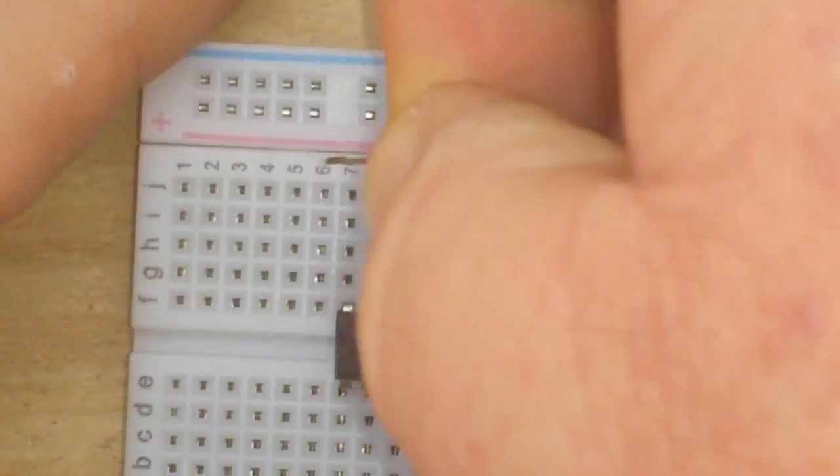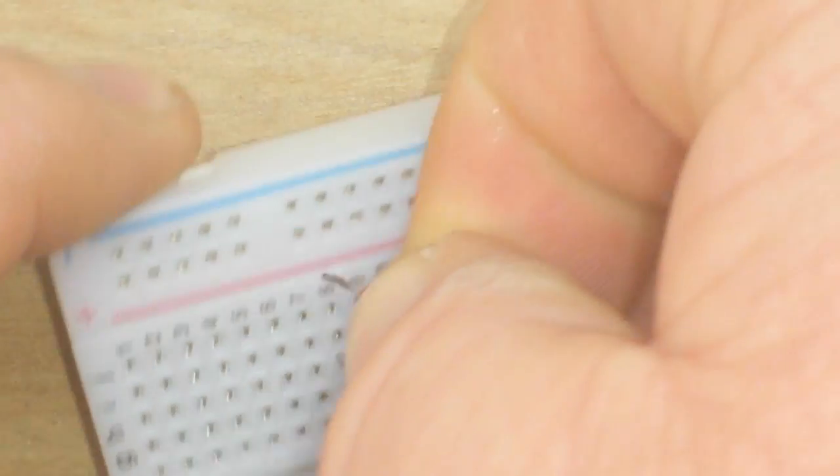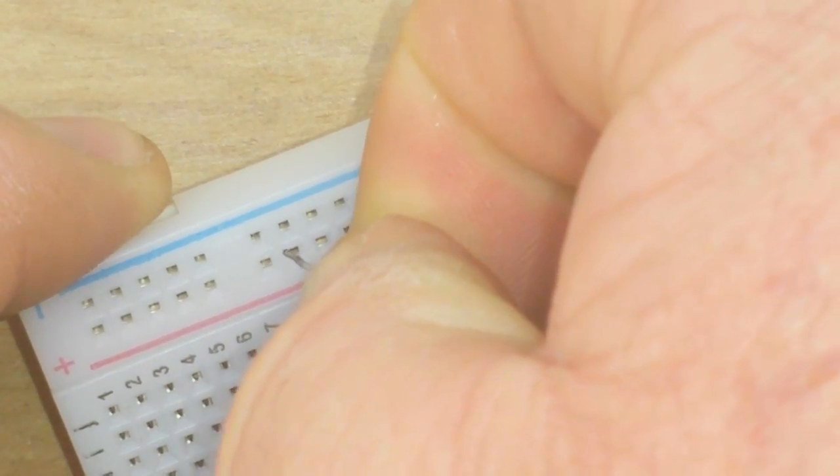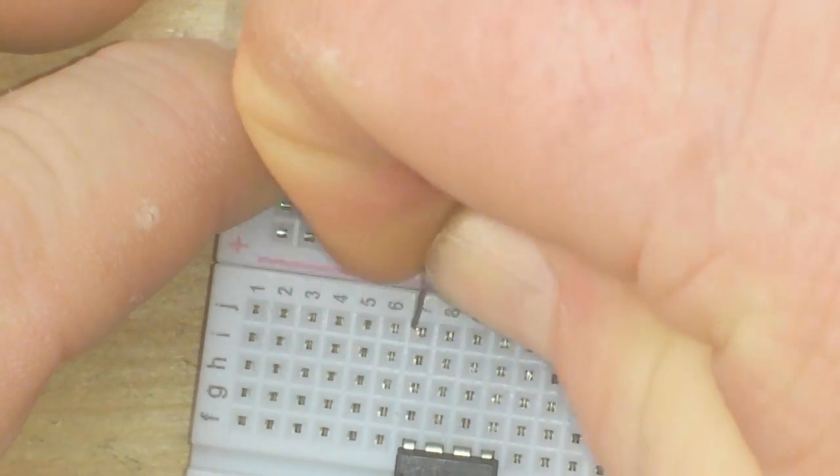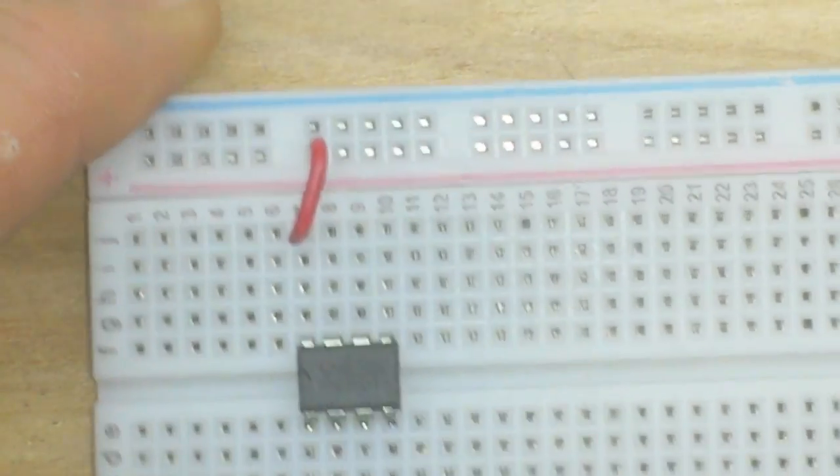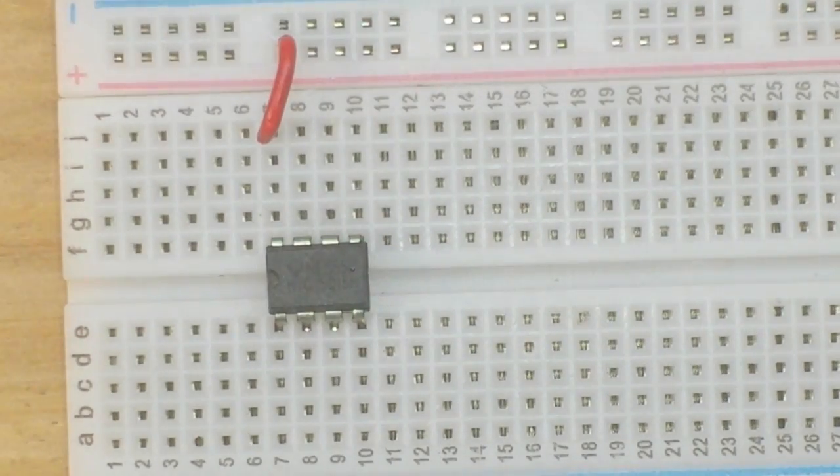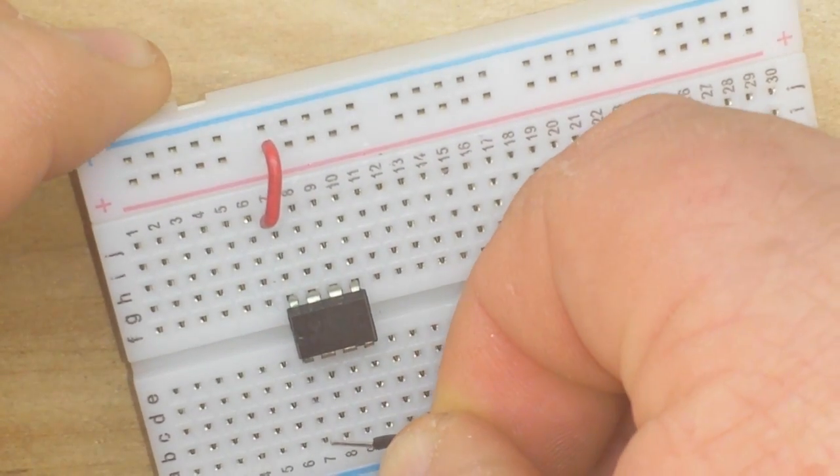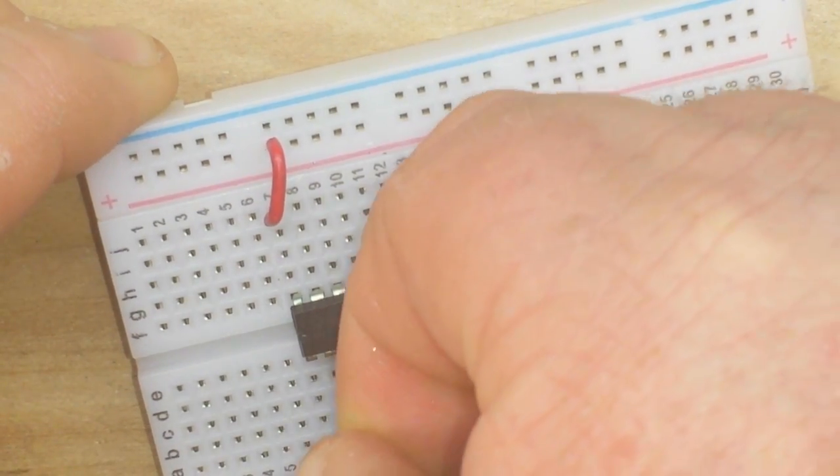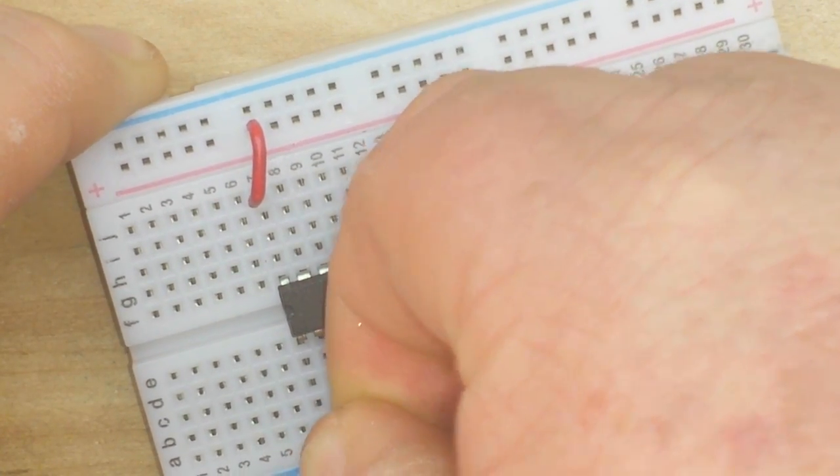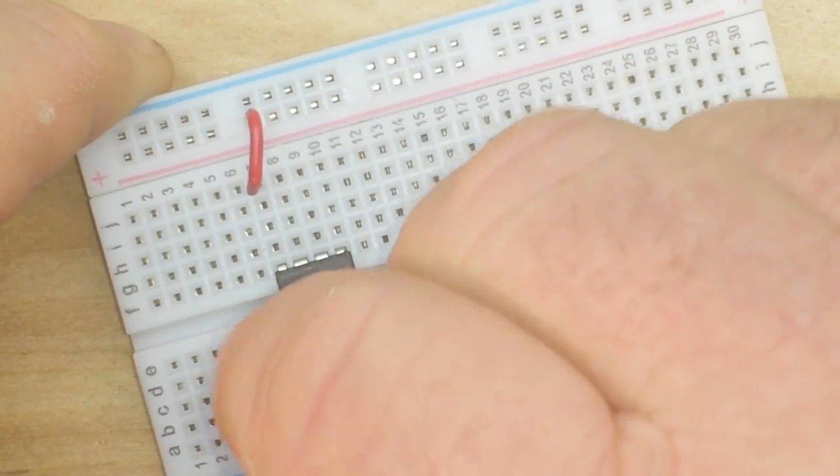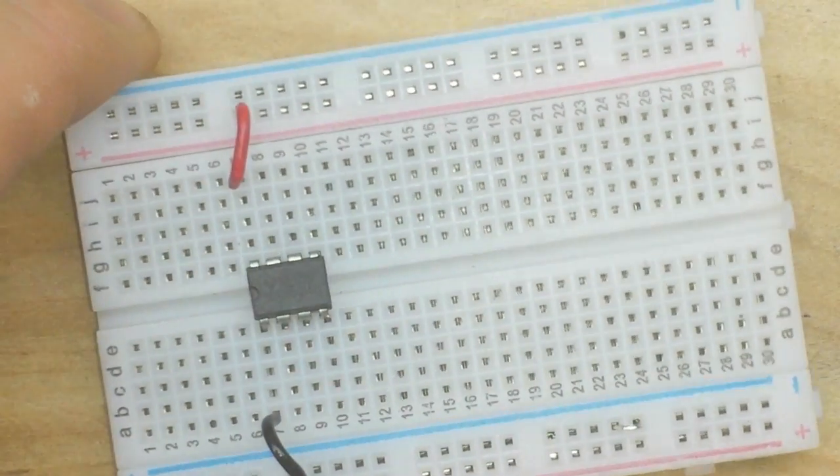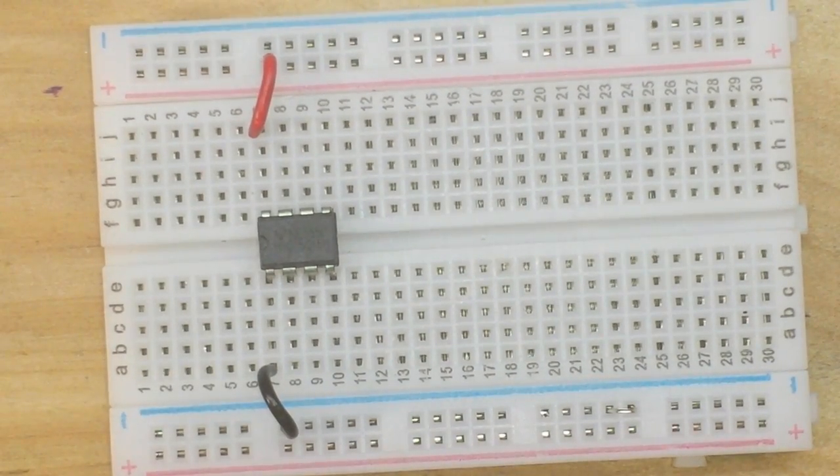Number one, we're going to take pin 8 to VCC. That's pin 7, Paul, with your big fingers. Okay. Pin 8 to VCC. Boom. I'll better zoom out a couple clicks so we can see the whole thing, huh? Okay. Pin 1 goes to ground. Pin 8 to VCC. Okay. So there's our power.